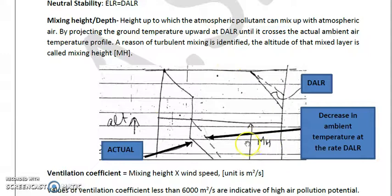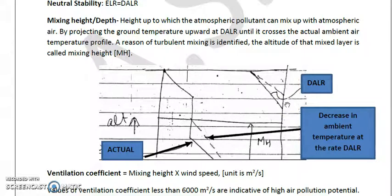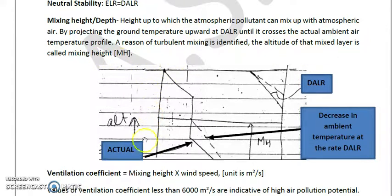The diagram also shows the dry adiabatic lapse rate and the actual ambient temperature profile. By projecting the ground temperature upward at the DALR until it crosses the actual ambient temperature profile, we identify a region of turbulent mixing. The altitude of that mixed layer is called the mixing height (MH). Mixing height is thus the altitude of the turbulent mixing layer, where ambient temperature decreases at the rate of DALR.